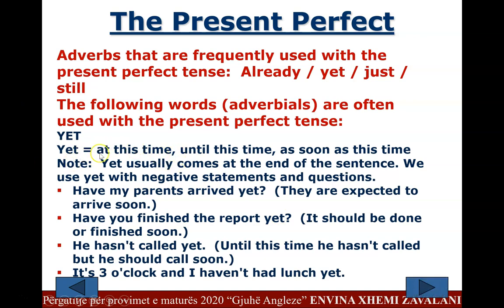'Yet' means: at this time, until this time, or as soon as this time. Note: 'yet' usually comes at the end of the sentence, and we use it with negative statements and questions. Examples: 'Have my parents arrived yet?' 'Have you finished the report yet?' 'He hasn't called yet — until this time he hasn't called, but he should call soon.' 'It's 3 o'clock and I haven't had lunch yet.'